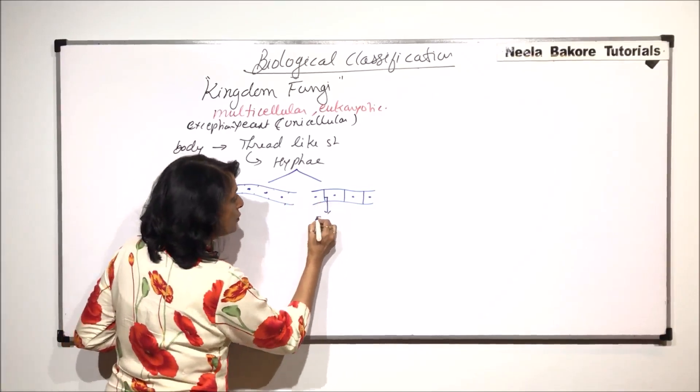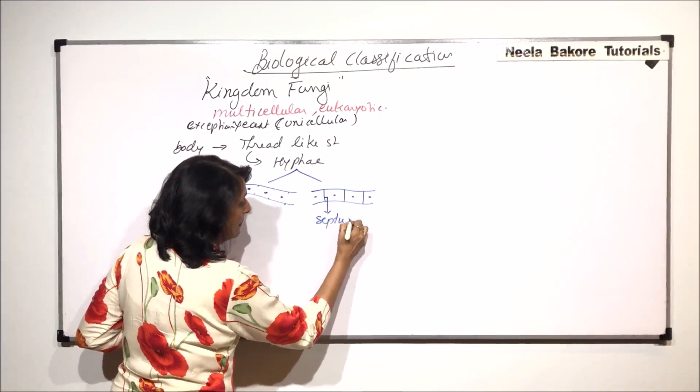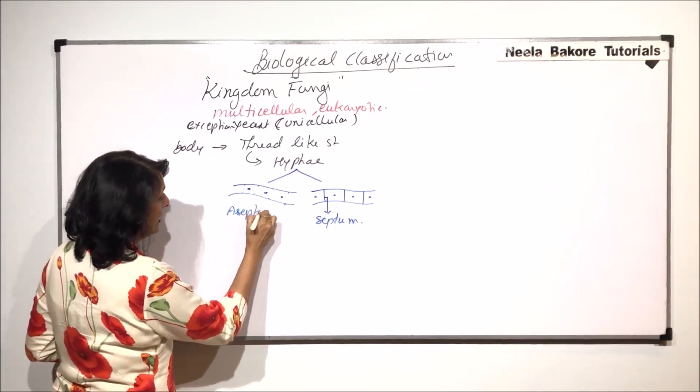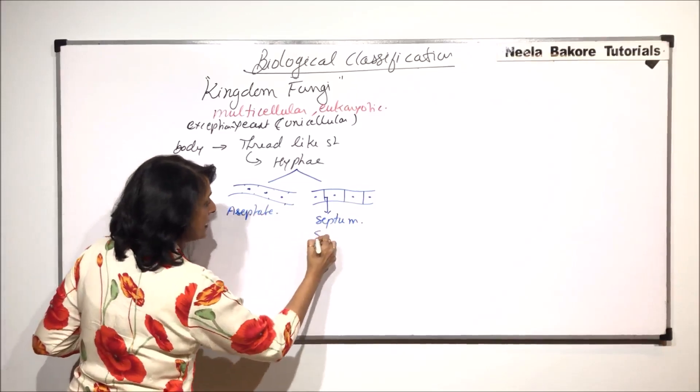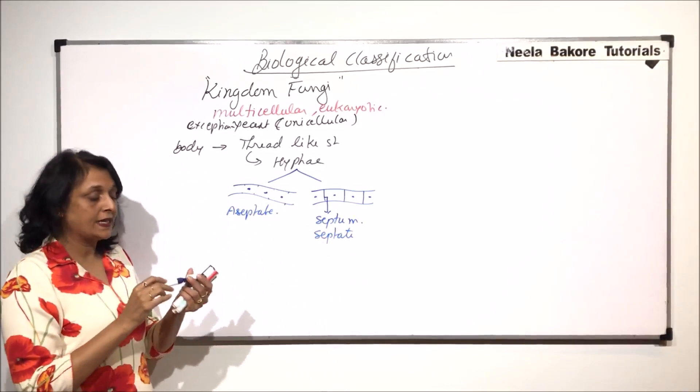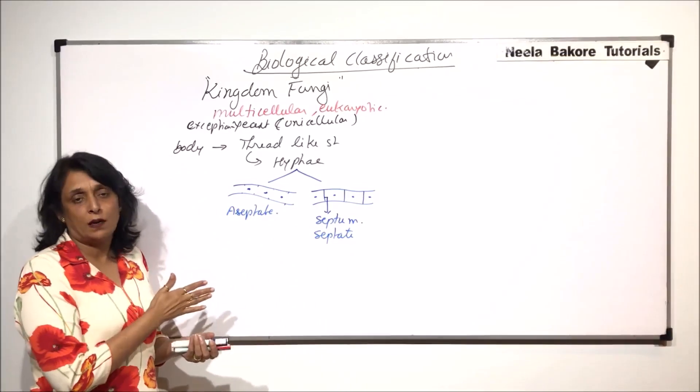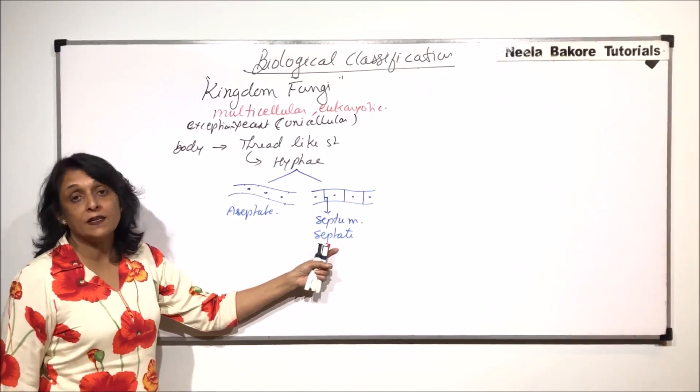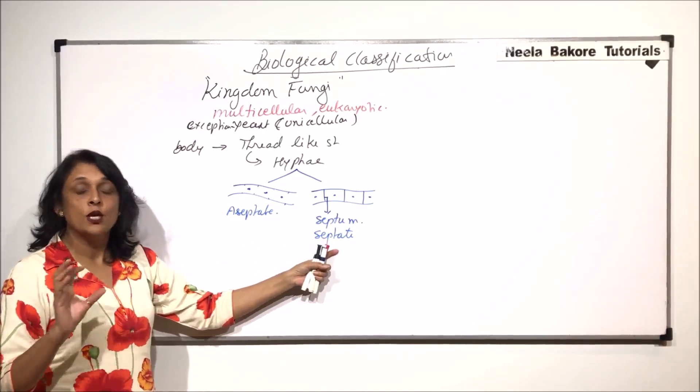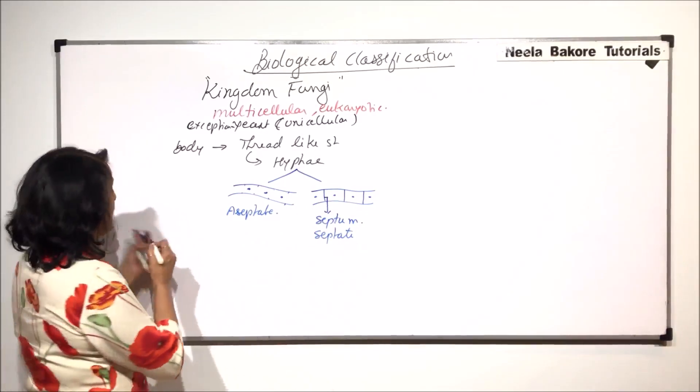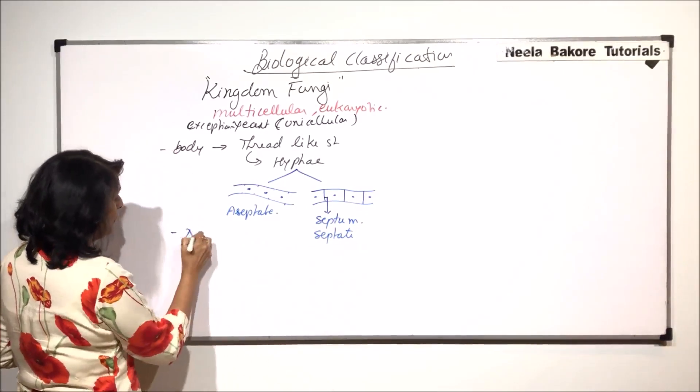And this partition which we have drawn is called the septa. So here it is aseptate hypha and this is the septate one. Aseptate is considered as a lower category or property, whereas septate are considered as higher fungi. So those fungi which would have septate, they would be placed under higher fungi. They do not have chlorophyll.